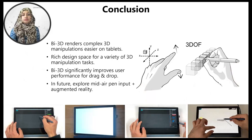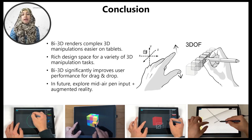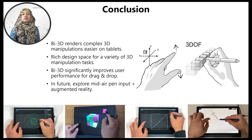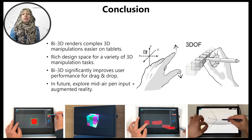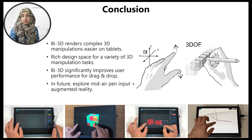In this work, we introduced Bi3D as a concept for dynamic bi-manual interactions on tablets to facilitate 3D manipulation tasks. This opens a rich design space for techniques to operate a variety of 3D manipulation tasks, and we showed that this can significantly improve user performance for the fundamental 3D drag and drop task. Interesting future directions include exploring techniques above the tablet surface and integration into augmented reality environments. We thank everyone for their attention and are happy to discuss further questions.